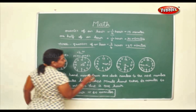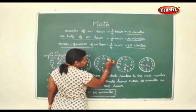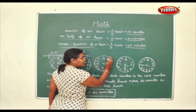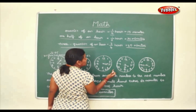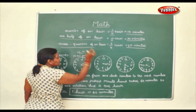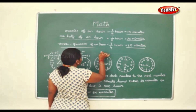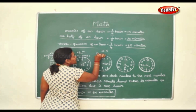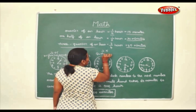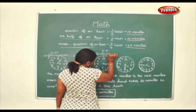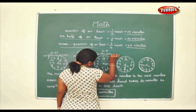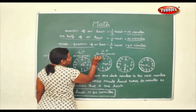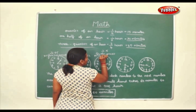Same way here, counting: 5, 10, 15. You can write this as 3:15, or fifteen minutes past three, or quarter past three.